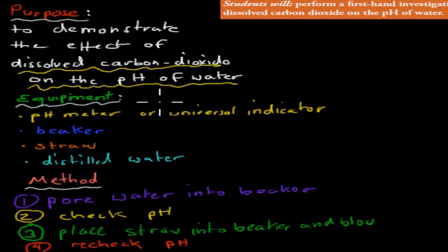So the equipment you might have used in your class would have been a pH meter or a universal indicator. These are just ways that we can test the pH of things. You would have had some form of beaker, a straw, and some distilled water. And the reason why it has to be distilled is because if it's not distilled, then it might not have a pH of 7, neutral pH.